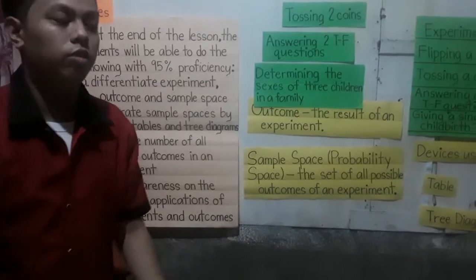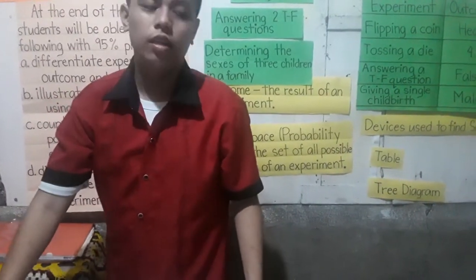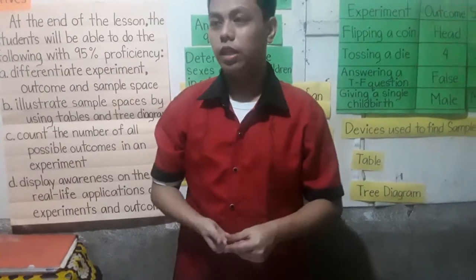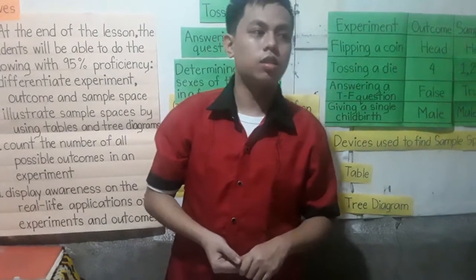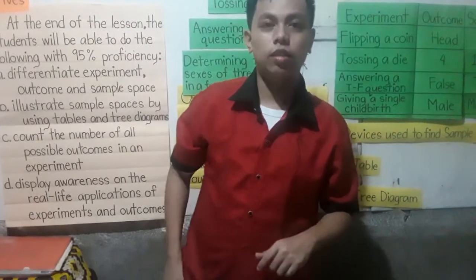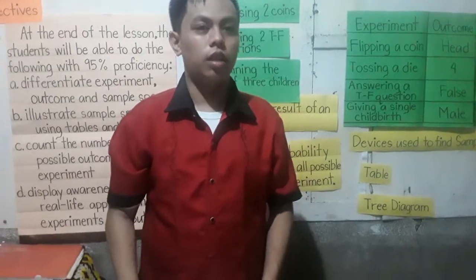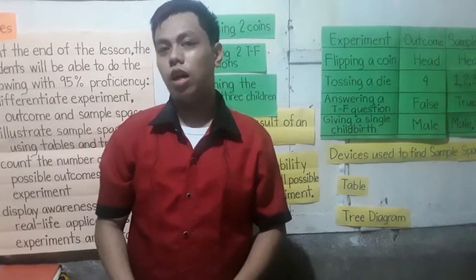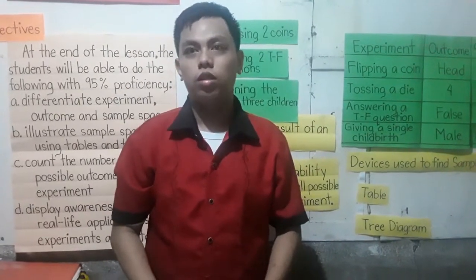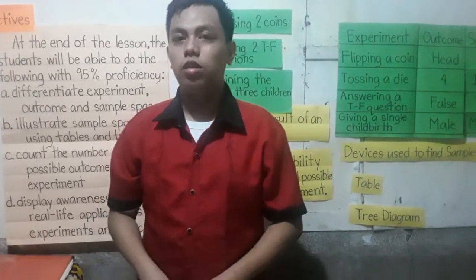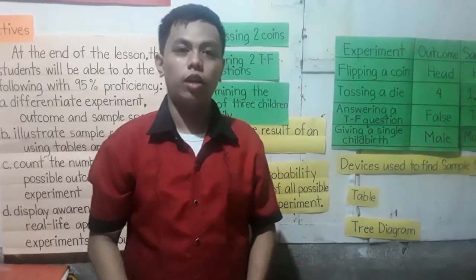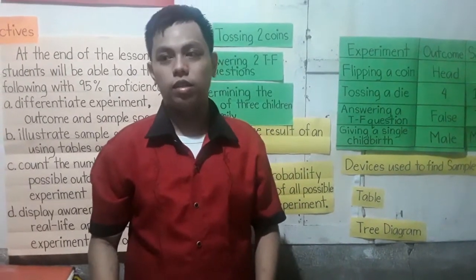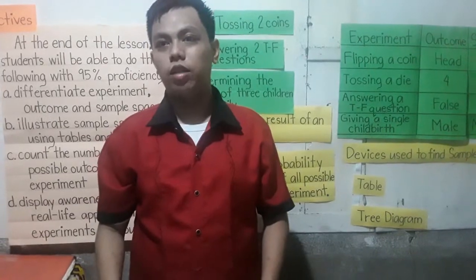So we're done with our lesson. Who can share an idea on how this lesson is applied to real life? Miss Kathleen, please stand. Thank you for your nice idea. Experiments and outcomes are very useful — just like when you are ordering a meal in a restaurant, buying a phone based on model, color, and brand, or when you are pairing your shorts and pants. All those things require experiments and outcomes.